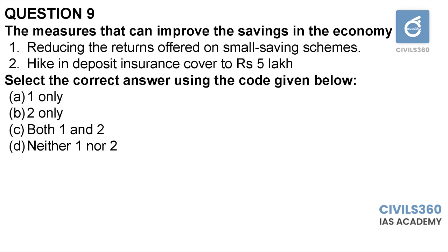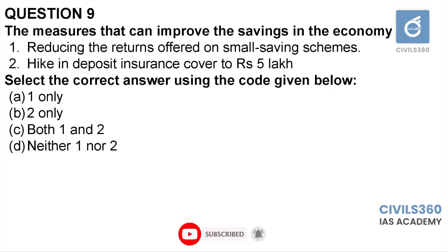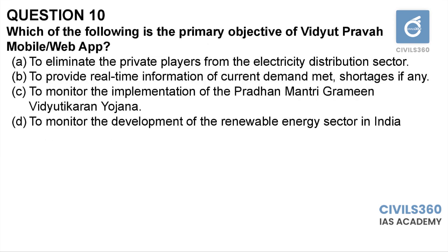Question number nine: the measures that can improve the savings rate in the economy are — one: reducing returns offered on small savings schemes. Two: hiking deposit insurance cover to rupees five lakh. Lowering returns means savings go down, as people might withdraw and put money elsewhere. To improve the savings rate, we need to improve returns on small savings schemes. Hiking the deposit insurance cover will invite more deposits and encourage savings. Therefore the answer is option B, two only.